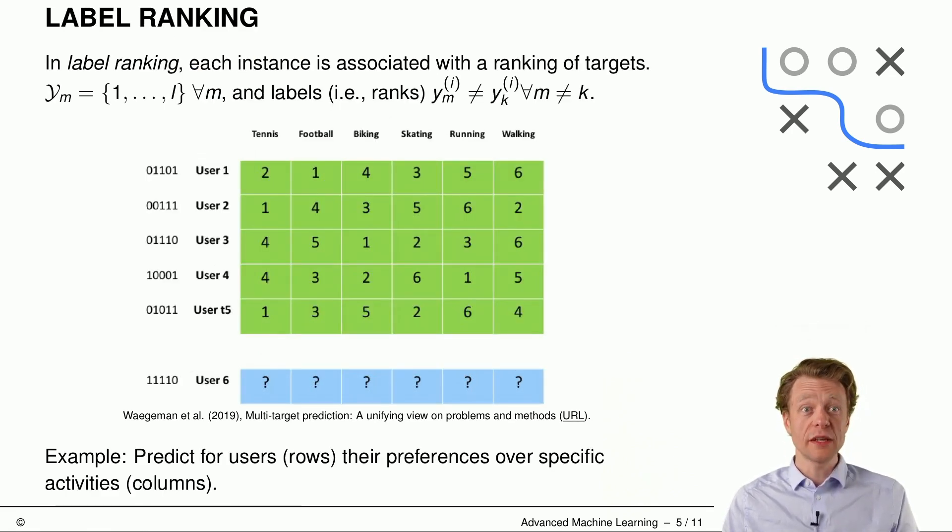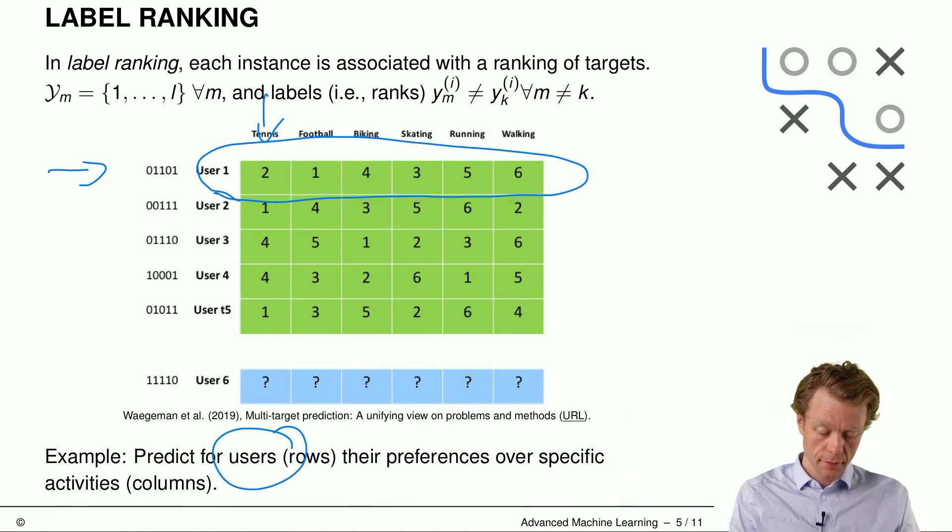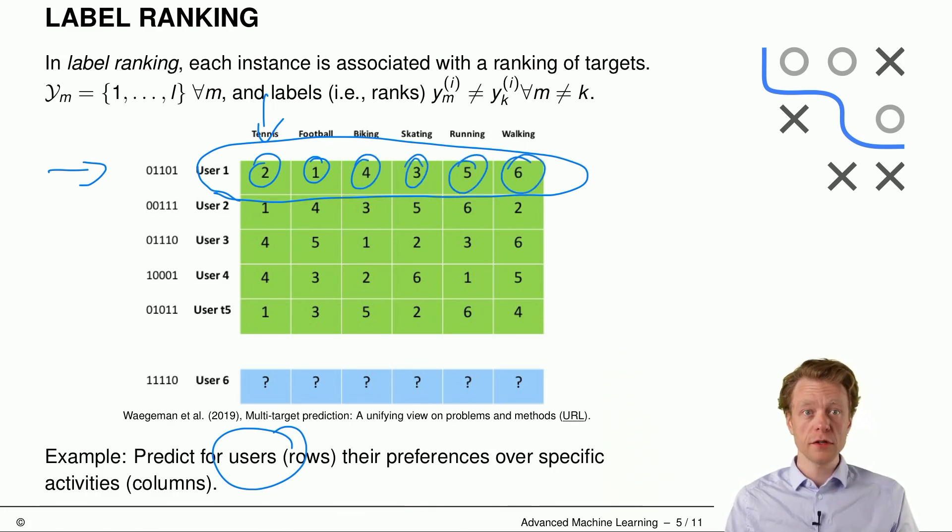Then the third application would be label ranking. So in this case, again, the rows are the instances. These are users of some platform. And in the columns, we have the preferences for specific activities. And each user now may specify his or her preferences. So this means that one row here is made up by ranks of this user. So we have football, then tennis, then skating, then biking, then running, and then walking for user 1, and user 2 has a different ranking. So in each row, we have all numbers from 1 to 6. And these constitute rankings for that specific user.